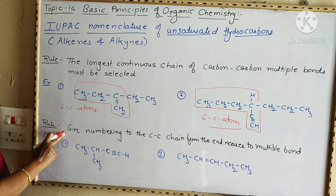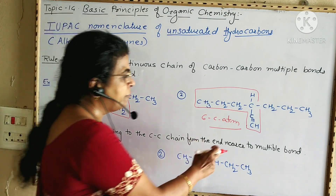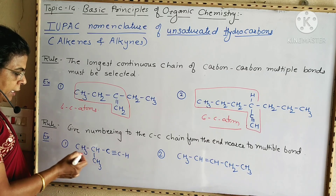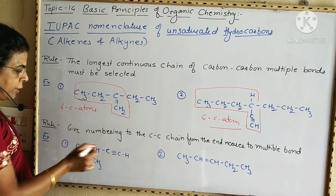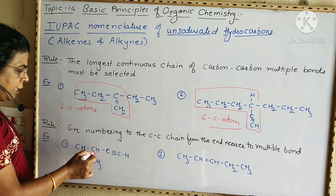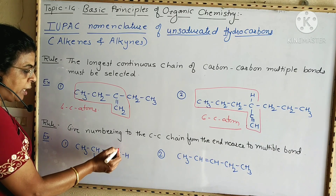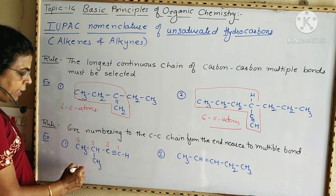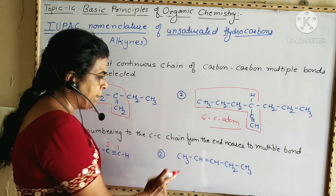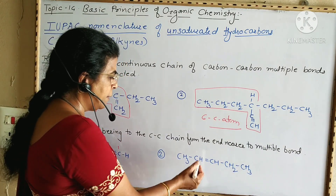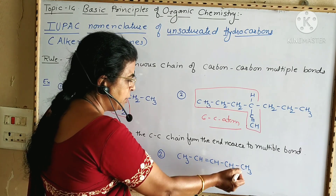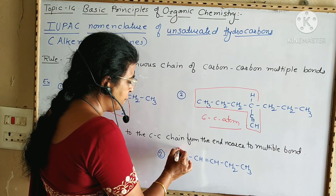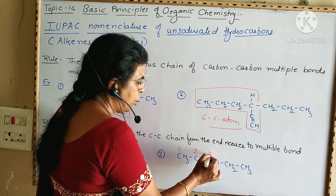Rule two: give numbering to the carbon chain from the end which is nearer to the multiple bond. In the first example, there are four carbon atoms with branching, but we number from the end nearer to the multiple bond: one, two, three, four. In the second example, with five carbon atoms, the end nearer to the double bond is at position one, two — so the double bond falls at position three, making that the correct numbering.